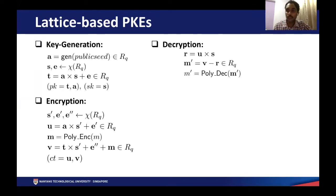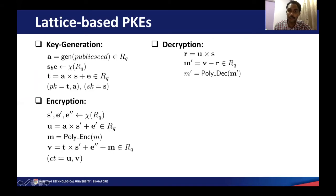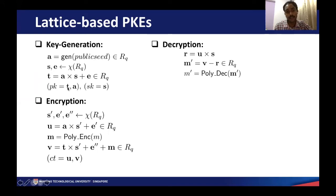In the key generation procedure, we generate an LWE instance. We have a component A, which is a public constant generated from a public seed. We sample two small polynomials S and E, where S is the secret polynomial and E is the error polynomial. These two polynomials are sampled from a very narrow distribution. We generate the component B, which is the LWE instance equal to A times S plus E. The pair A and B form the public key, while the secret polynomial S forms the secret key.